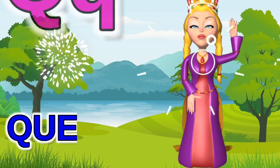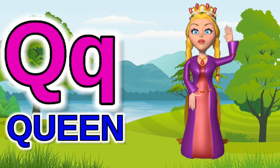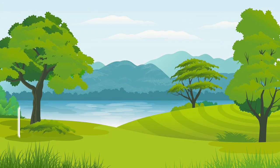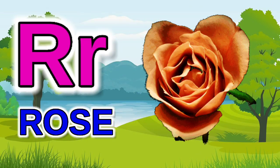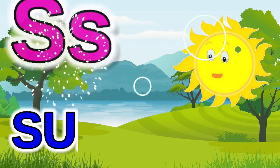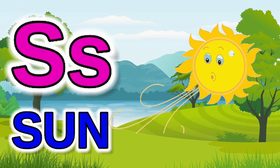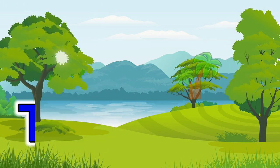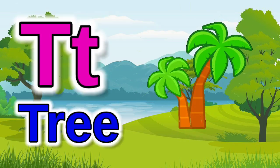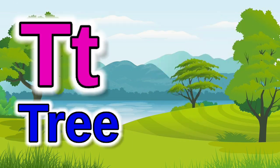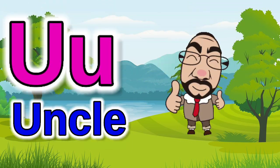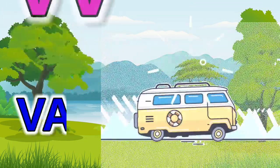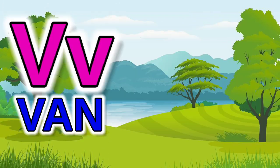Q for queen, R for rose, S for sun, T for tree, U for uncle, V for hen.